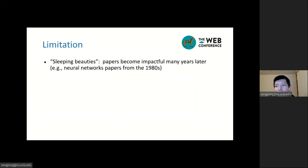Although our model can achieve a good performance, it also has some limitations. For example, our model cannot work well on papers who will become impactful many years later, after the publication year. This phenomenon is also called sleeping beauties. For example, some neural networks papers in the 1980s. They become very popular with the recent development of deep learning. But our model cannot have a good prediction for those papers.